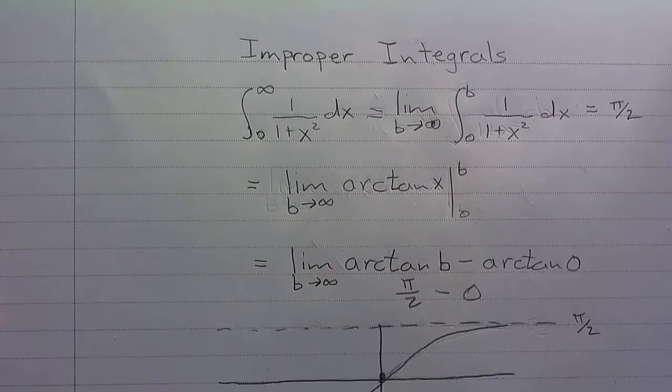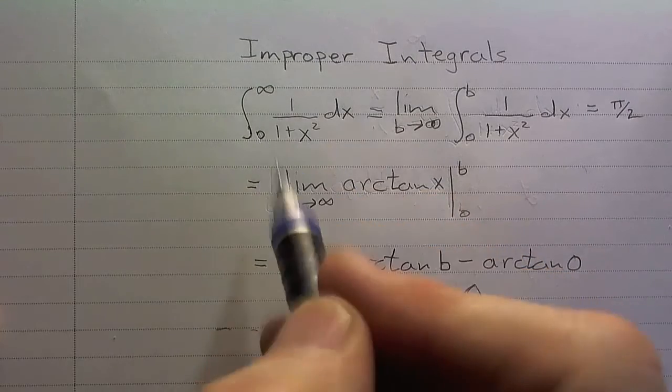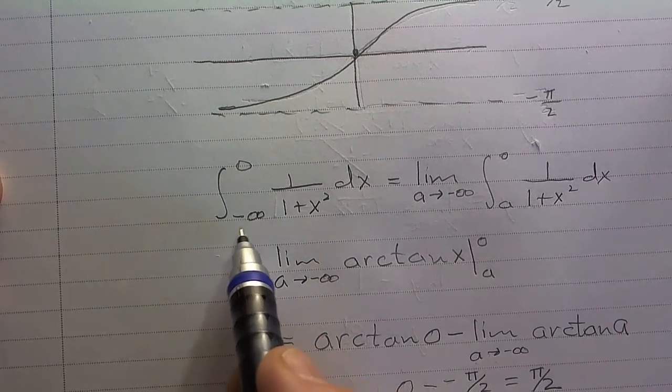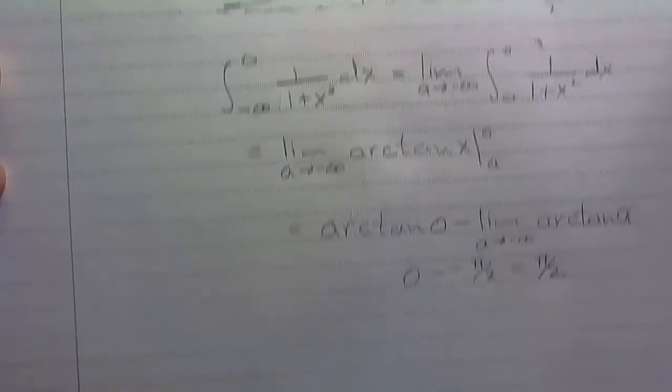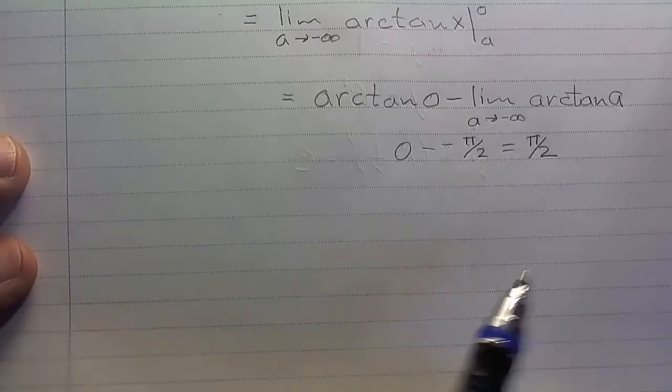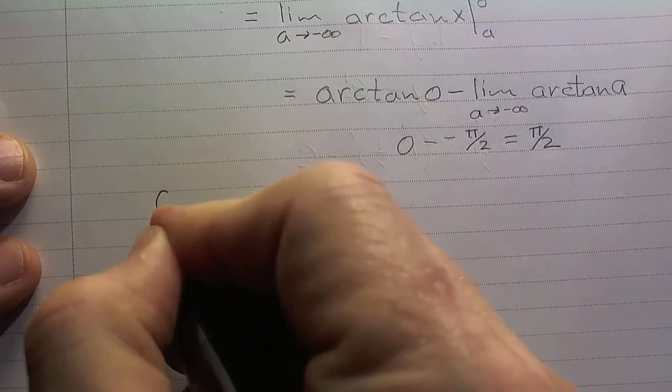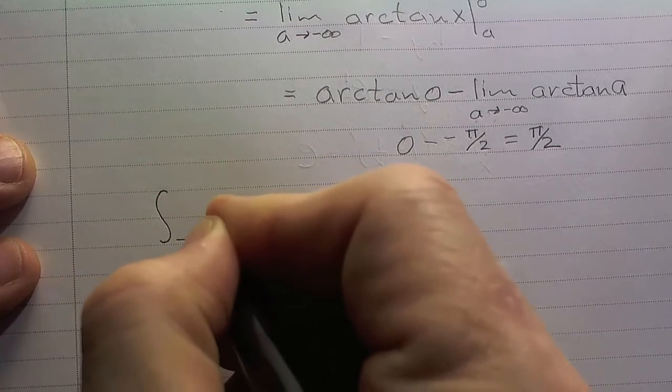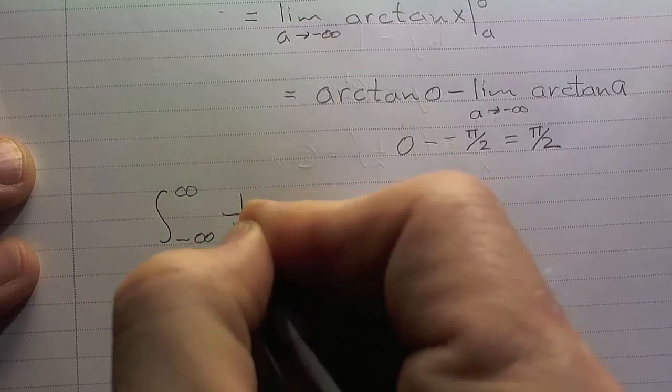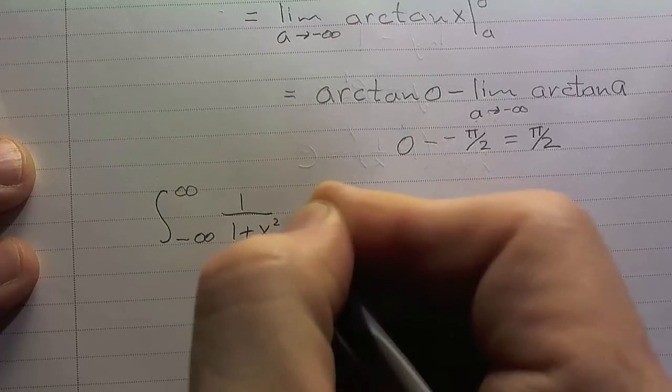Okay, so notice we have – we've dealt with this integral from 0 to infinity, and then we've said, well, let's go the other way. Come from negative infinity to 0, and we've dealt with both of those. Now, sometimes you'll see this situation where you have negative infinity to infinity of 1 over 1 plus x squared dx.